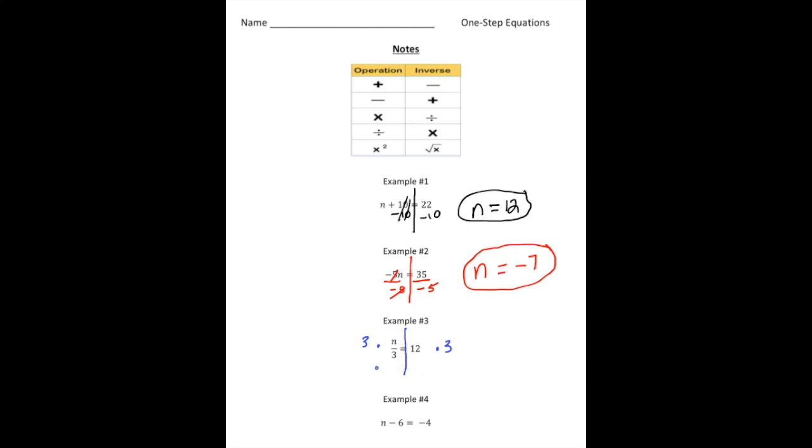So now when we do this, we're going to have, these are going to cancel out. And n is going to equal, 12 times 3 is 36. And there it is. Just like the first two, we can plug it in. 36 divided by 3, it is indeed 12.